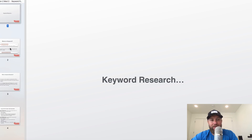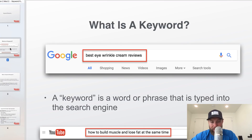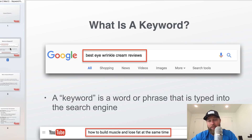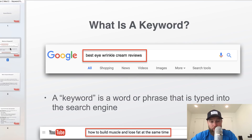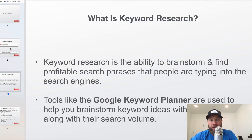So number one: what is a keyword when it comes to search engine optimization, SEO? If you don't know what SEO is, it's basically the ability to rank at the top of the search engines and via YouTube for different keywords and key phrases. A specific keyword is a word or phrase that is typed into the search engine. It doesn't matter how long or short it is — it could be one word, three words, or five words plus. Examples include 'best eye wrinkle cream reviews' and 'how to build muscle and lose fat at the same time.' So a keyword is basically just anything being typed into the search engine. Keyword research is basically the ability to brainstorm and find profitable search phrases that people are typing into the search engines.